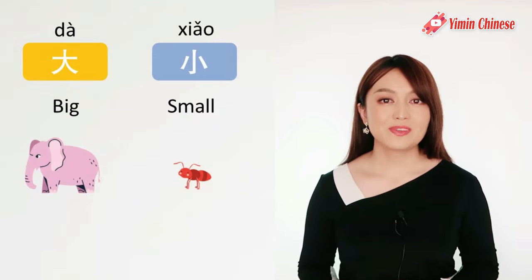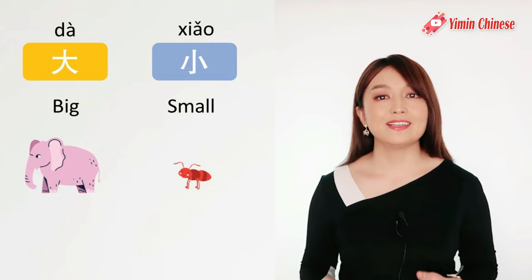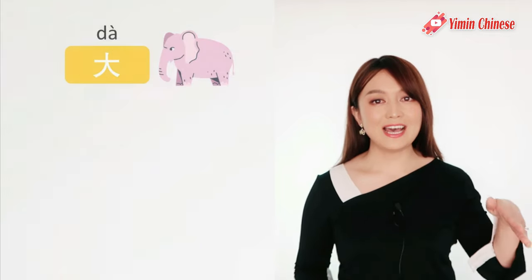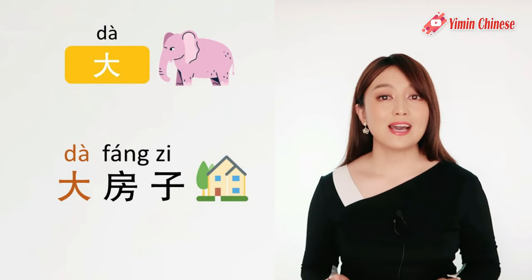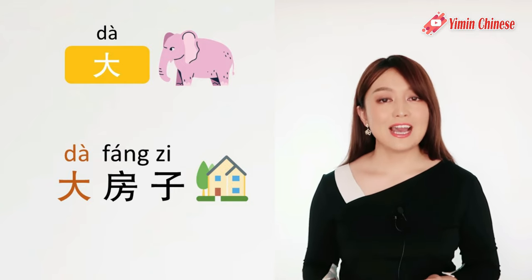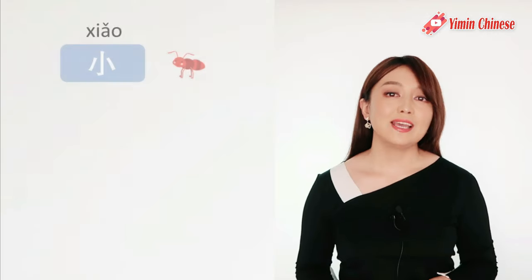下一组, next pair is 大 and 小, big and small. 大, big. 比如说, 大房子, big house: 大房子. 我想要一个大房子, I want a big house: 我想要一个大房子.